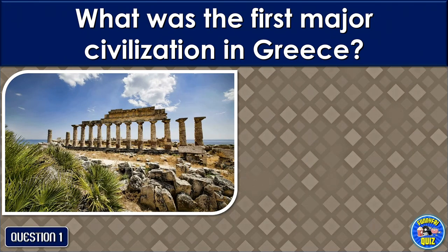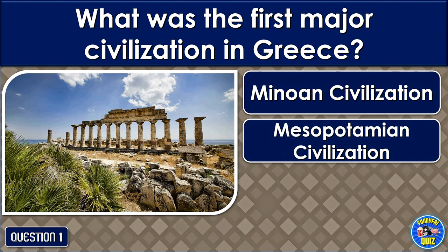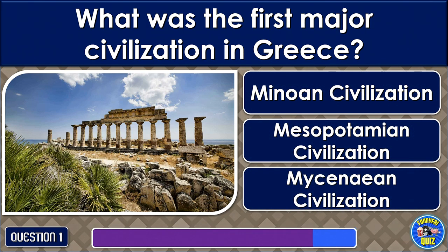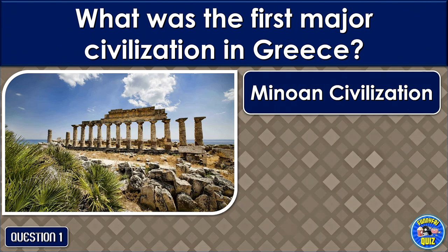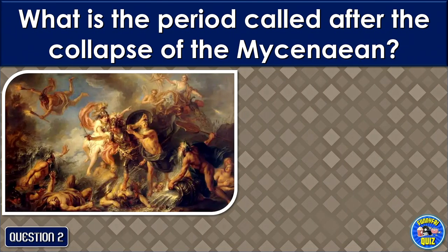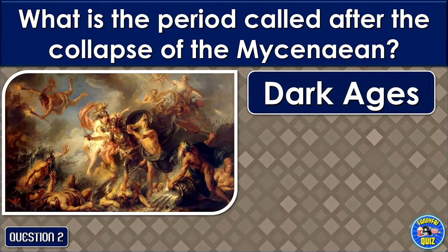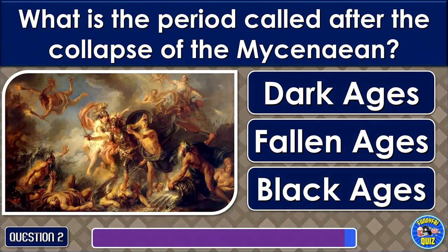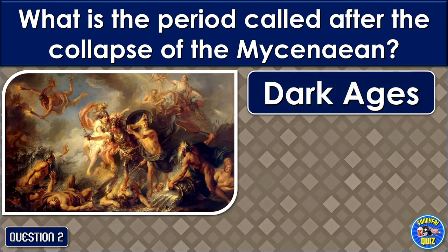What was the first major civilization in Greece? The Minoan Civilization. What is the period called after the collapse of the Mycenaean? The Dark Ages.